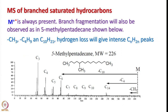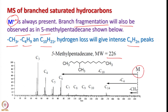Now let us look into the mass spectrum of branched saturated hydrocarbons. The cationic radical is always present in branched saturated hydrocarbons, and branch fragmentation will also be observed, as in 5-methylpentadecane. Here CH3, C4H9, and C10H21 hydrogen loss will give intense CnH2n peaks. Molecular weight is 226, and once it loses one methyl group and then 4-carbon links we can trace fragments down to 3 carbons. Hydrogen loss gives intense CnH2n peaks in branched saturated hydrocarbons.